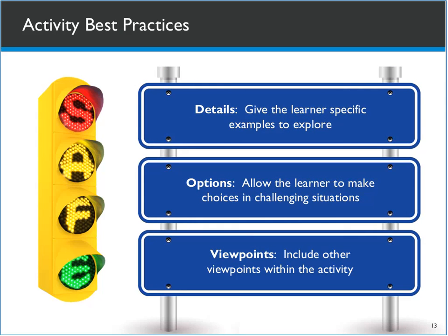When creating these activities, best practices include making sure we include details — specific examples for them to explore — giving them the background knowledge they'll need to make decisions in the future. We also want to give them options: what choices can we give them to put them in challenging situations? That goes back to our go-and-stop example, allowing them in a safe environment to make choices and see the consequences of their actions. Whenever possible, we want to incorporate alternate viewpoints — from pedestrians to the operator to the surrounding environment — to include a holistic view of the impact of the safety decisions they're making.